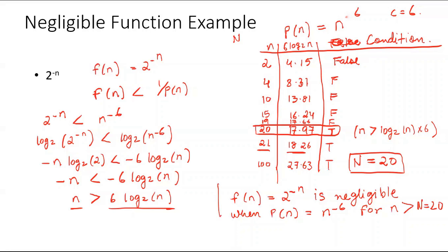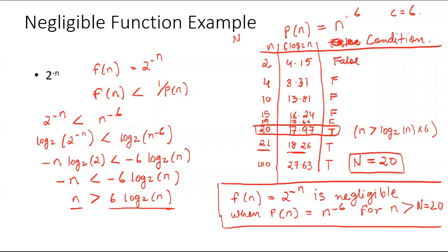For n greater than 20, this function is negligible. But I chose n to the power minus 6 in my example, which is why I got N equals 20. If you choose another polynomial, say n to the power minus 5, you will get a different value of N. It depends on what polynomial you pick, but whatever polynomial you pick, this function will be negligible — only the threshold N depends on the polynomial.